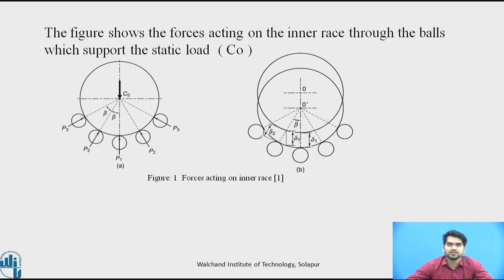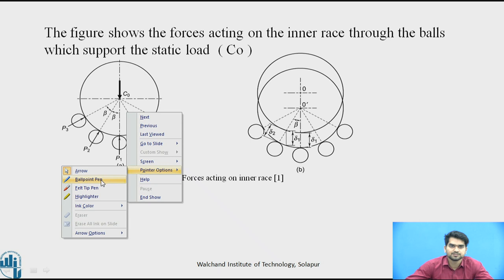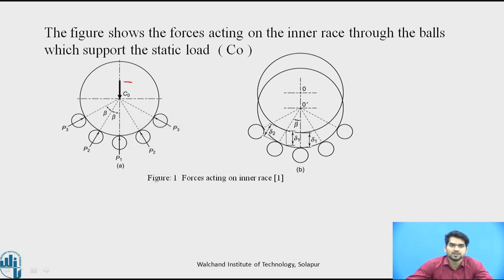For calculating the static load carrying capacity, you should know how forces act on the balls and races. If you observe this figure, the static load acts from the shaft to the balls and races in the vertically downward direction, indicated by C₀ — the static load carrying capacity. Equal and opposite reaction forces act from the balls back upward, and as C₀ is vertically downward, the reactive forces P₁, P₂ act in the upward direction.